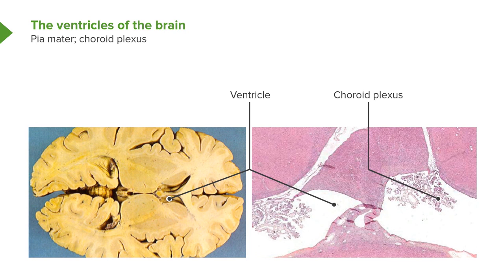The choroid plexus is an extension of the pia wrapping around groups of little blood capillaries. That choroid plexus produces the cerebrospinal fluid, which circulates in the subarachnoid space through all these ventricles and along the spinal cord. And finally, it returns to the vascular system — to the venous system — through structures called arachnoid granulations.